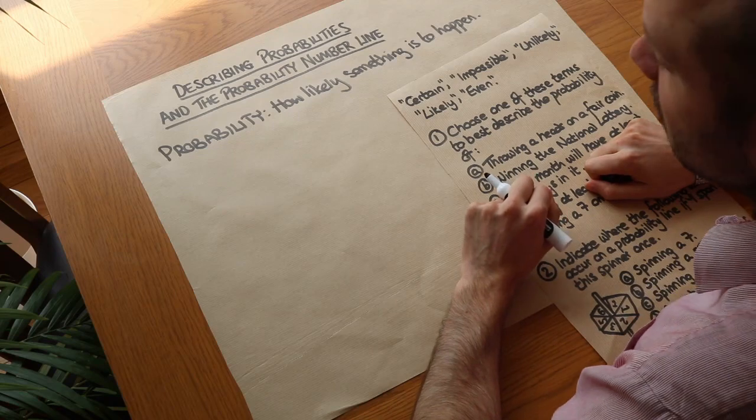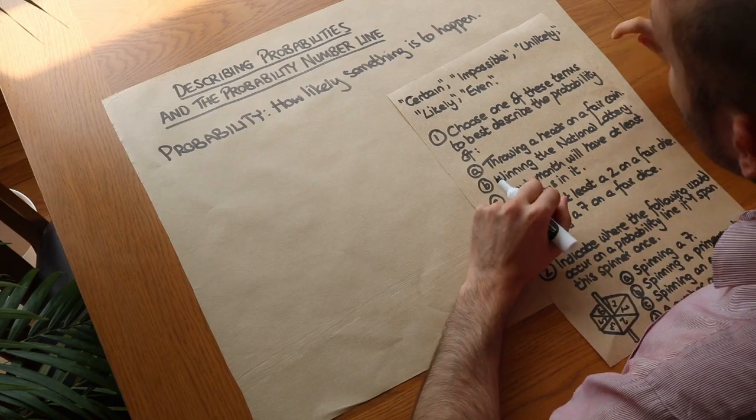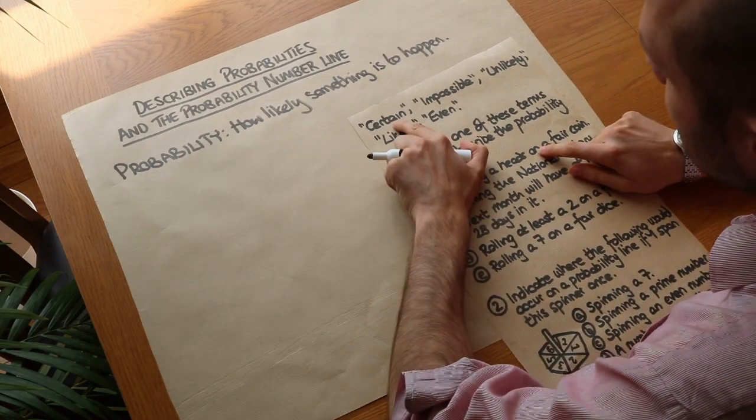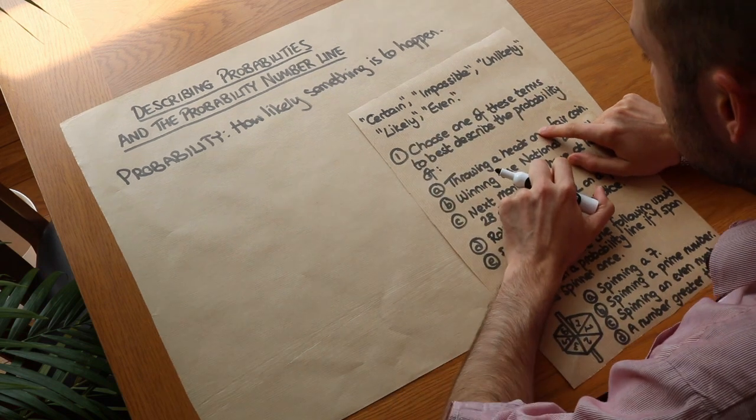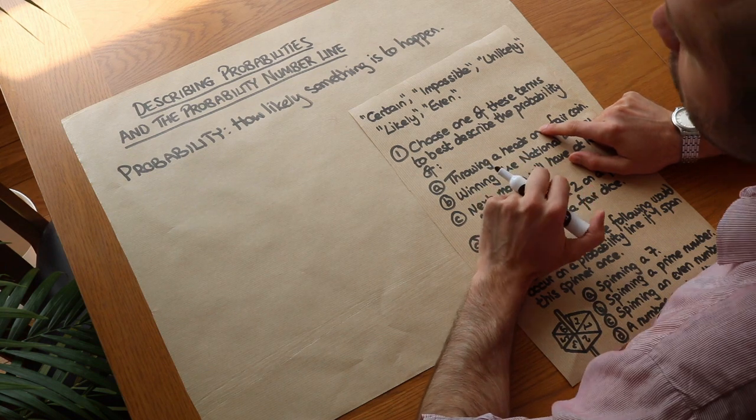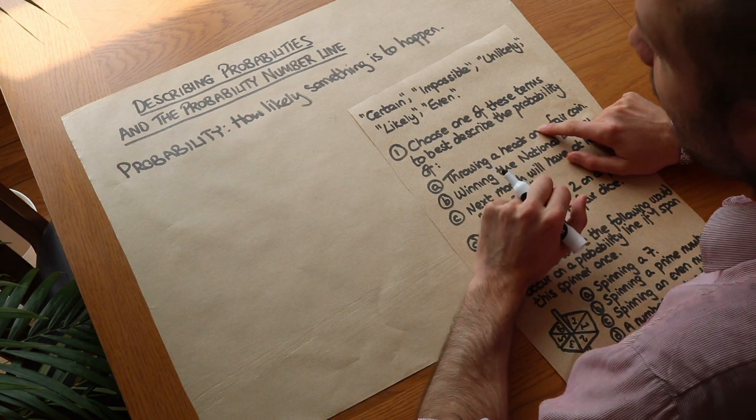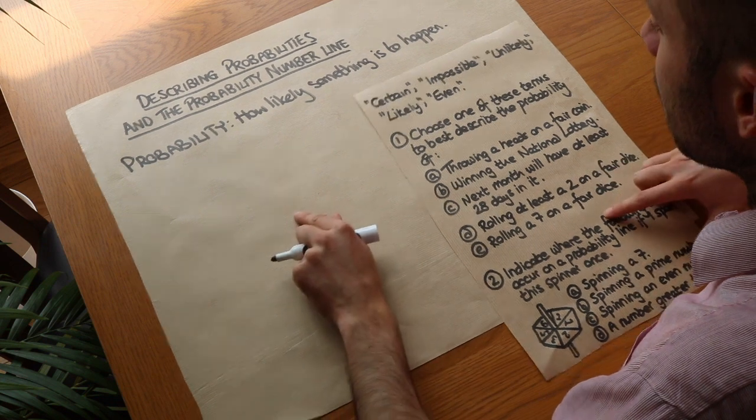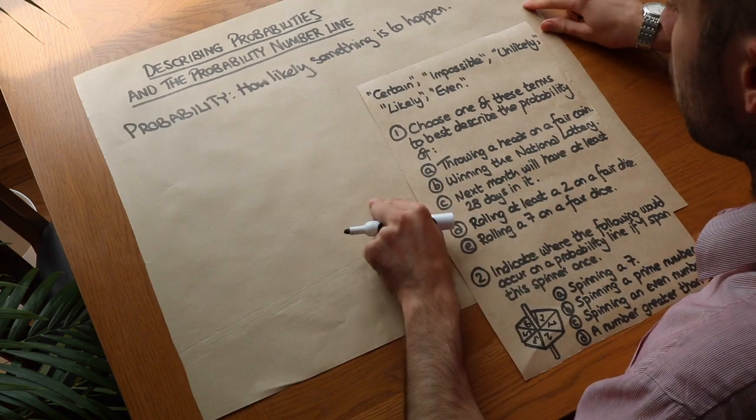Now there's two ways to describe a probability. We could use kind of worded terms like certain, impossible, unlikely, likely, even. And those are the terms you might see in exam. Or we could describe a probability using a number. And we'll see that in a bit. But let's describe probabilities in terms of words first.